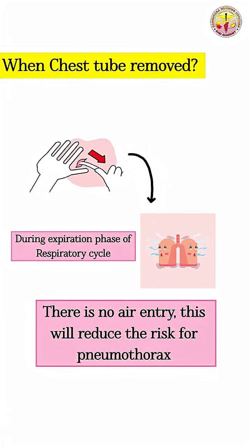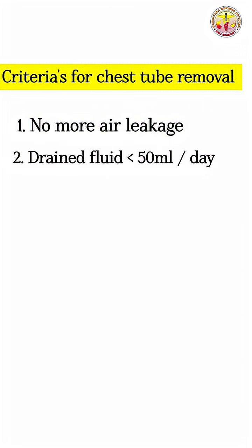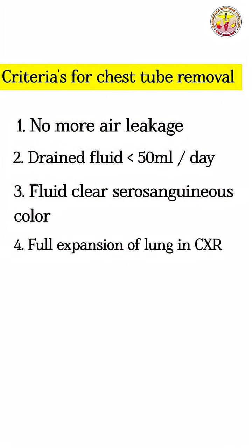The criteria for removal of chest tubes are: there should be no more air leakage, the drained fluid should be less than 50 ml per day, the fluid should be clear serosanguineous in color, and the last criterion is full expansion of the lung — particularly important in chest surgery.